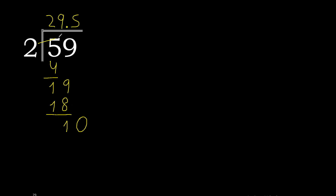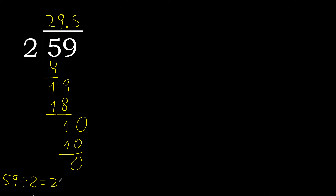2 multiplied by 5 is 10. Subtract 0, therefore finish. 59 divided by 2 is 29.5.